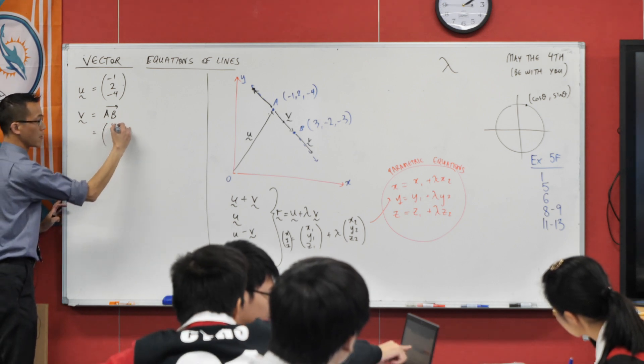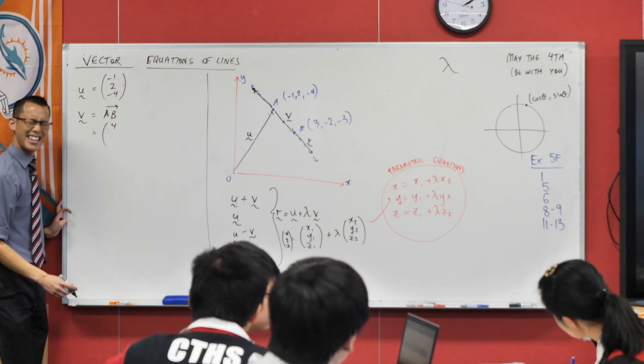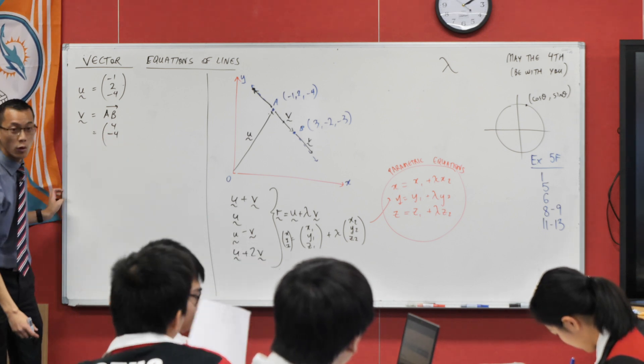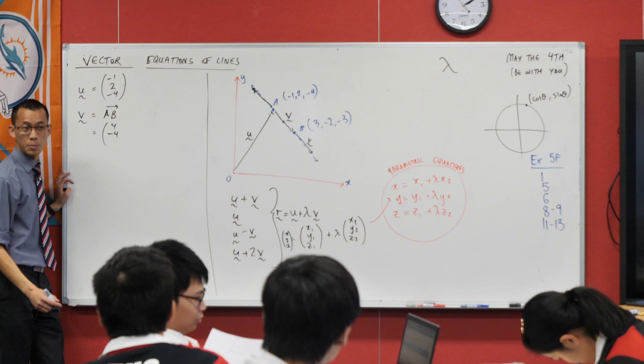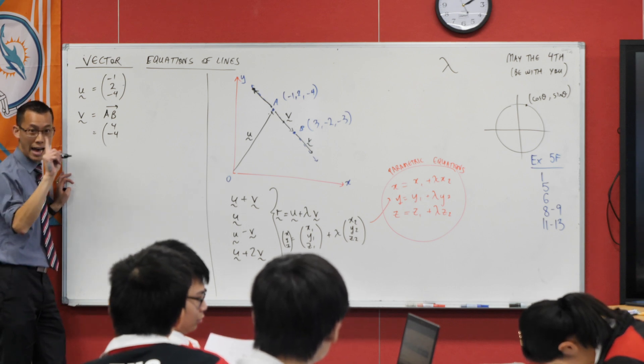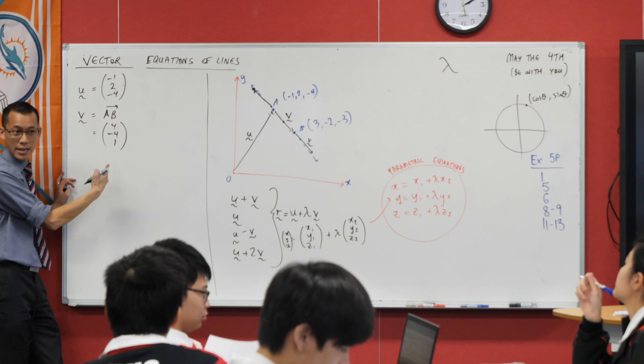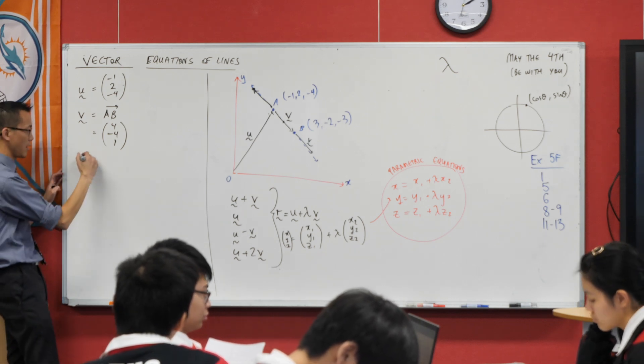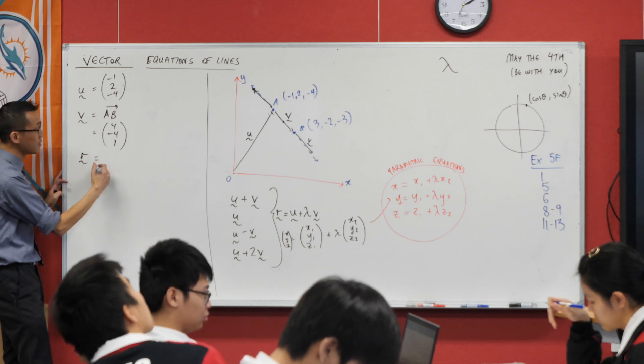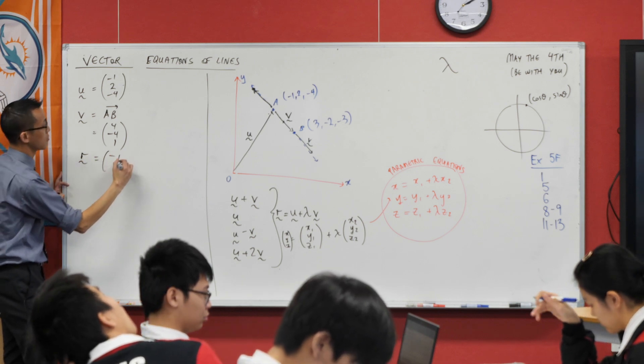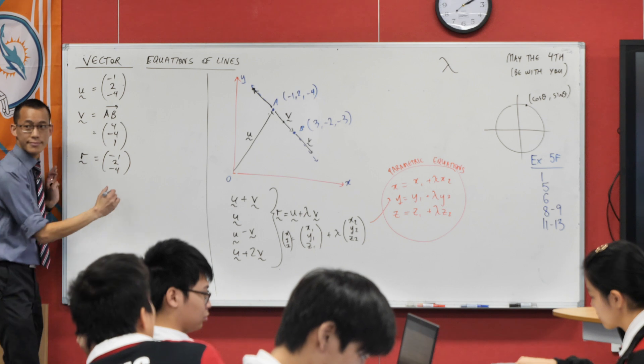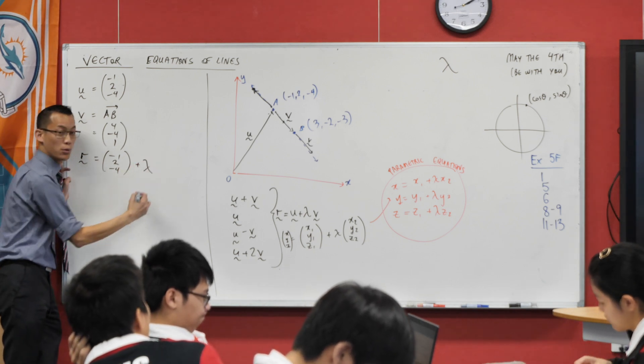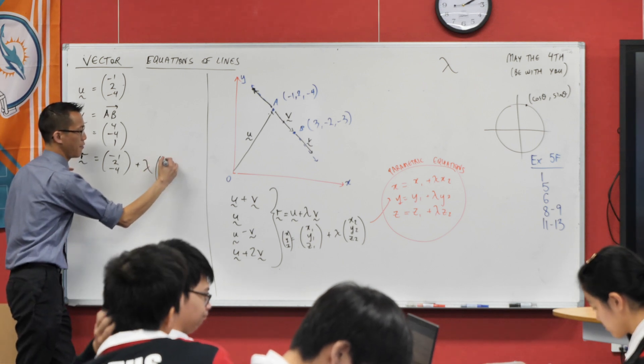You add 4. From 2, what do you have to do to get to negative 2? You subtract 4. And then from negative 4 to negative 3, just be careful with the signs, you add 1. So that's v. Therefore, this is, that was the hardest part of the work, the vector equation is you start with u, you add some multiple of v. Done. That wasn't too hard, was it?